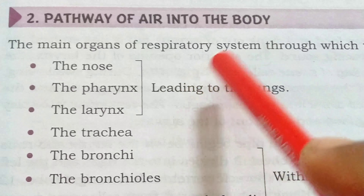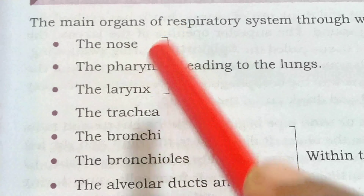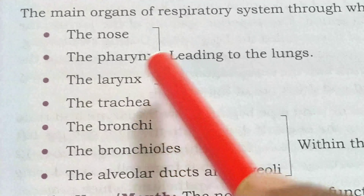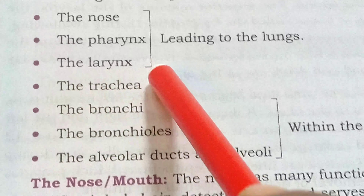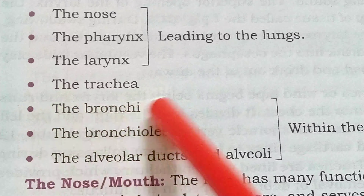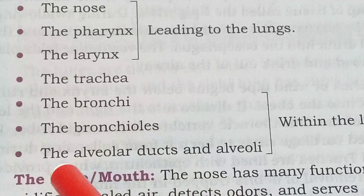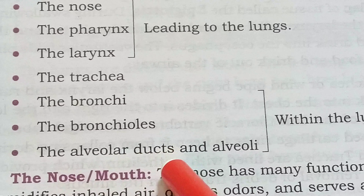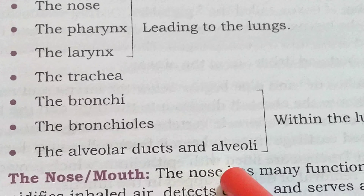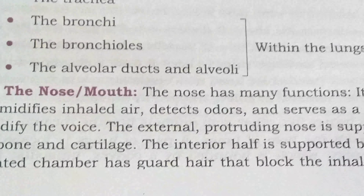The main pathway of the respiratory system — the organs involved in the respiration process — are the nose, pharynx, larynx, trachea, bronchi, bronchioles, alveolar ducts, and alveoli.